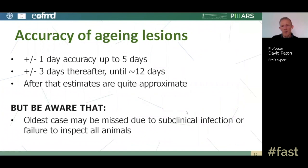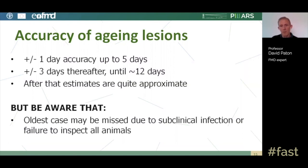A note on accuracy: lesion aging is most accurate at the beginning, and becomes increasingly difficult as lesions get older. With care, you can achieve about plus or minus one day accuracy up to around five days of lesion age, then plus or minus three days up to around twelve days old. After that, estimates become much more approximate, though you can still get some useful reference points.